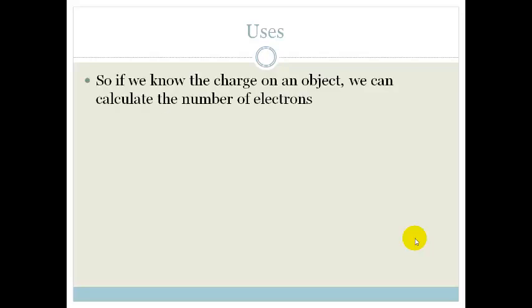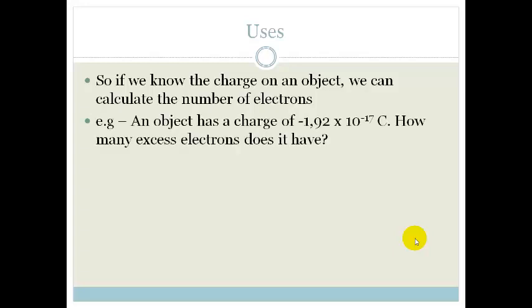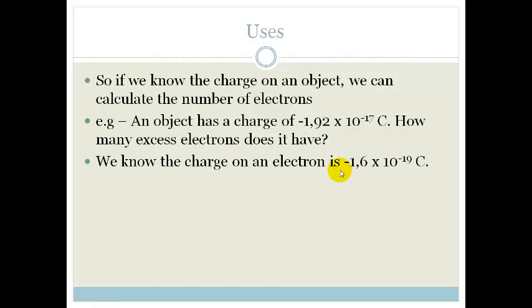So why is this useful? We know it's useful because we can actually work out the number of electrons transferred if we know the charge on an object. So let's say, for example, we've got an object which has a charge of minus 1.92 times 10 to the minus 17 coulombs. If we want to know how many extra electrons it has—in other words, how many extra electrons are making it have a negative charge—we can work it out.